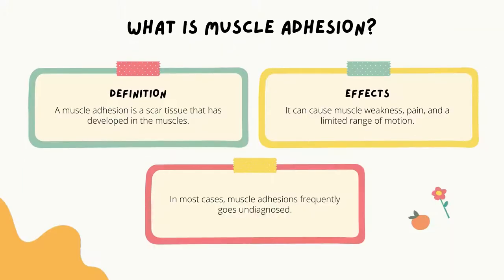What is Muscle Adhesion? A muscle adhesion is a scar tissue that has developed in the muscles. Adhesion acts like a collagen glue within the muscles, tendons, ligaments, nerves, fascia and other connective tissues. It can cause muscle weakness, pain and a limited range of motion.